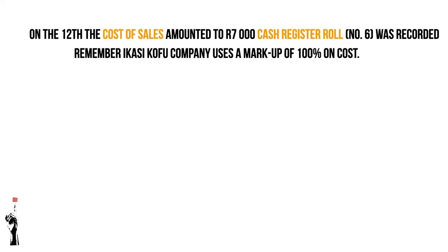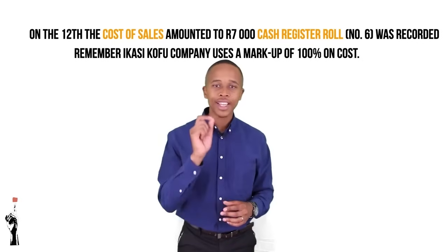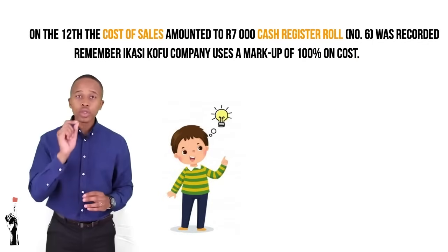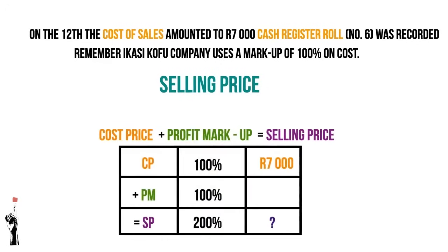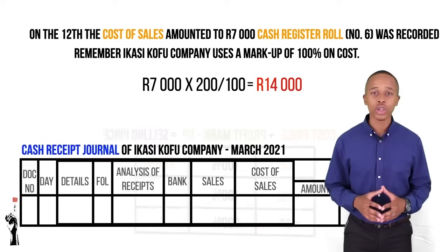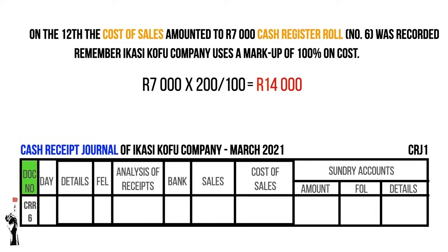On the 12th, the cost of sales amounted to 7,000 Rand. Cash register roll number 6 was recorded. Ikasi Kofu Company uses a markup of 100% on cost. First we calculate the selling price — the unknown. The calculation is: 7,000 Rand times 200 divided by 100, which equals 14,000 Rand. In the cash receipts journal, the document number is CRR6, the date is the 12th, and you can write 'cash' or 'sales' in the detail column. Record 14,000 Rand in the analysis of receipts, bank, and sales columns, and record 7,000 Rand in the cost of sales column.